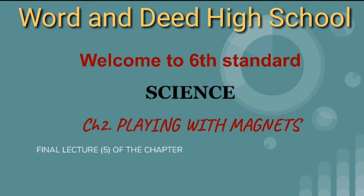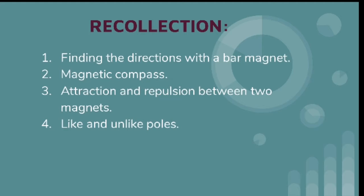I think this will be the final lecture of the chapter. Let us recollect the points that we talked about in the previous class. We talked about finding the directions with a bar magnet, magnetic compass, attraction and repulsion between two magnets, and like and unlike poles.